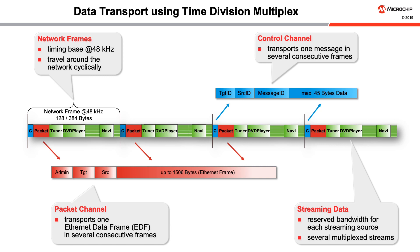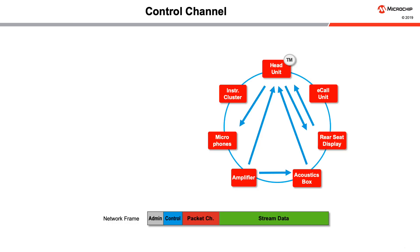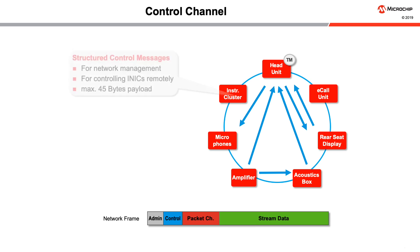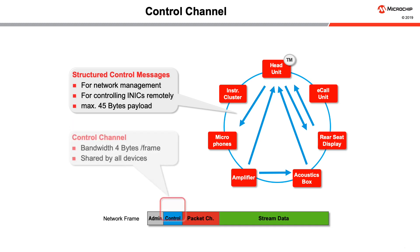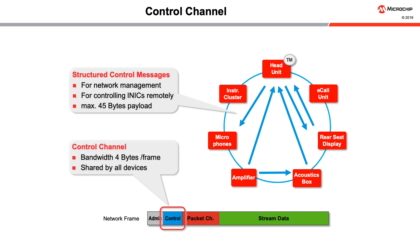In summary, a random network frame typically transports data originating from several different sources and targeting several different devices. The control channel supports communication between all nodes in an iNICnet. This is the basis for communication as well as for network administration. Control messages are also used for remote control of an iNIC in a remote device which may not have an external host controller with application code. The bandwidth of the control channel is fixed to four bytes of the frame and is shared by all devices in the network.